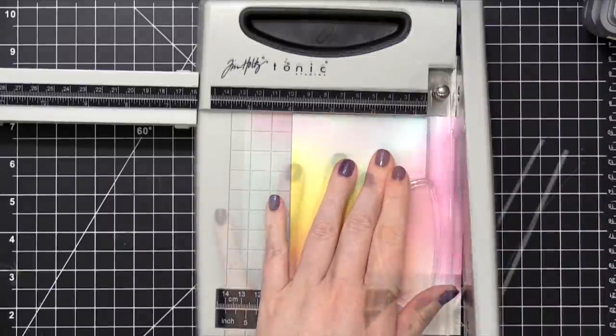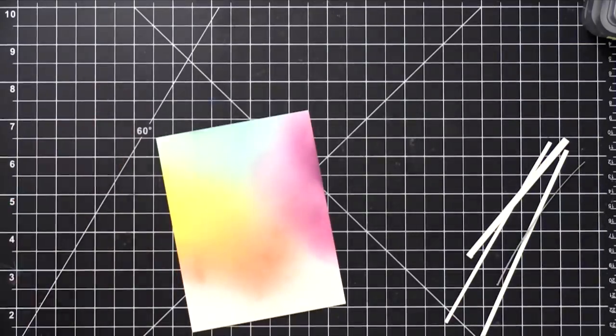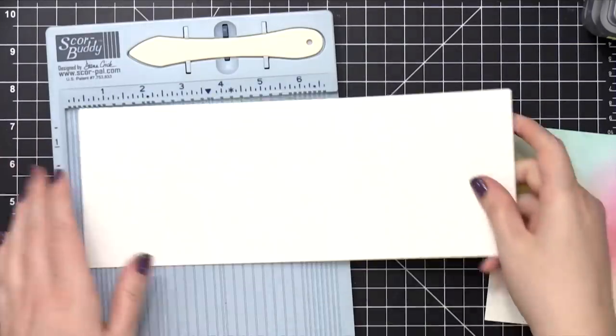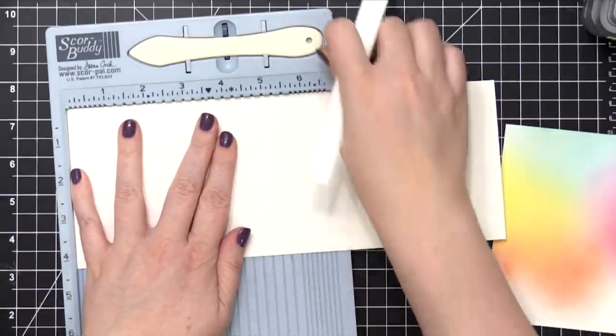So I'm gonna take this blended piece, and I'm gonna cut it down a little bit because it is gonna go onto the card front with the shaker area over the top. So I'm going to put this portion of the card together, and then I'll work on the actual shaker.